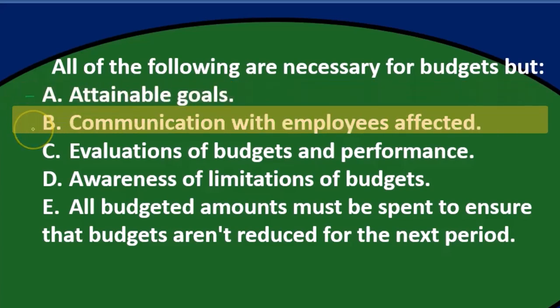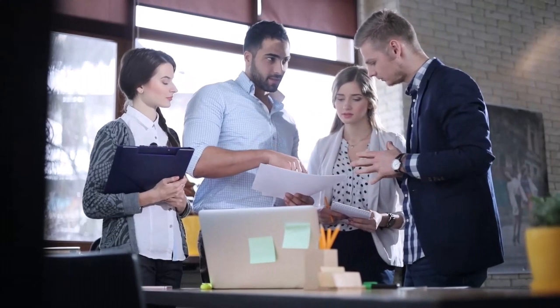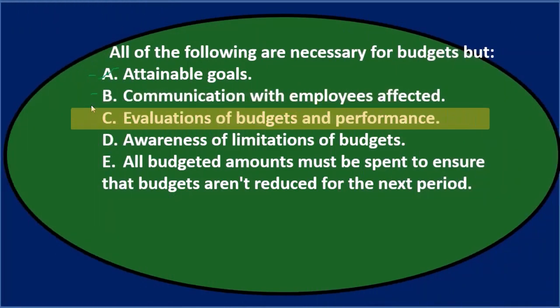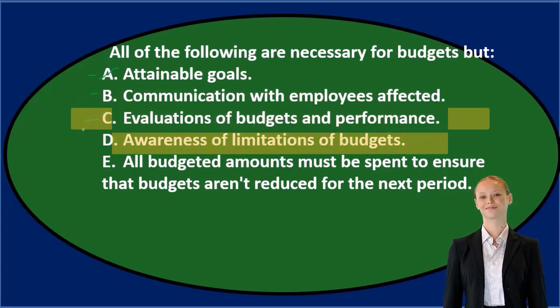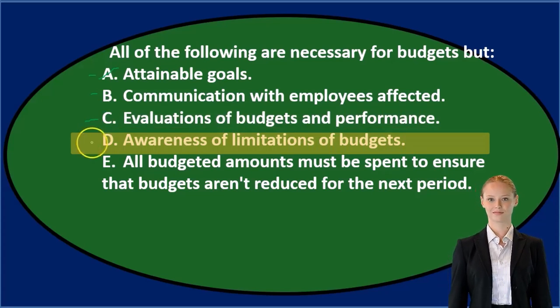B. Communication with employees affected — since A seems applicable, I'll cross it out. Communication with employees — you would think that's something you'd want to do, but maybe it's not mandatory, so I would keep that for now. C. Evaluations of budgets and performance — that's part of the budgeting process, so I would think that would be reasonable. D. Awareness of limitations of budgets — we probably want to have that as well.